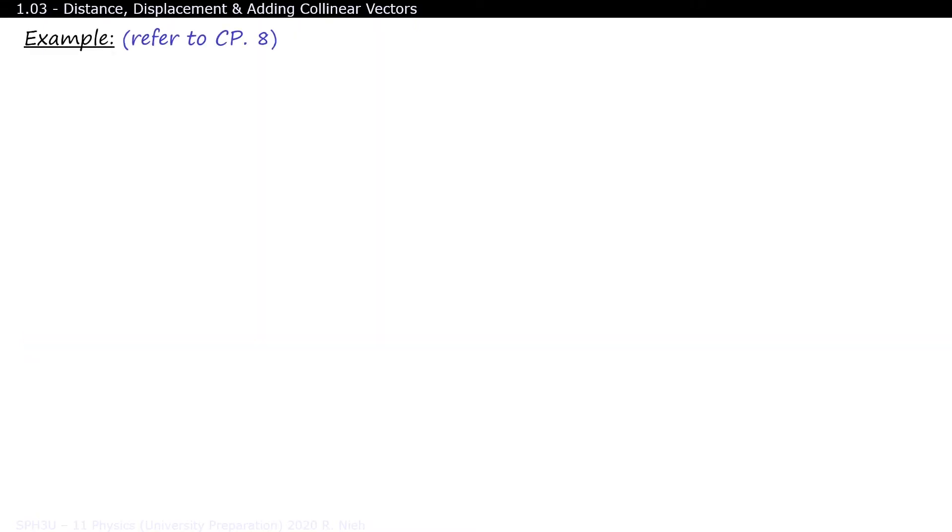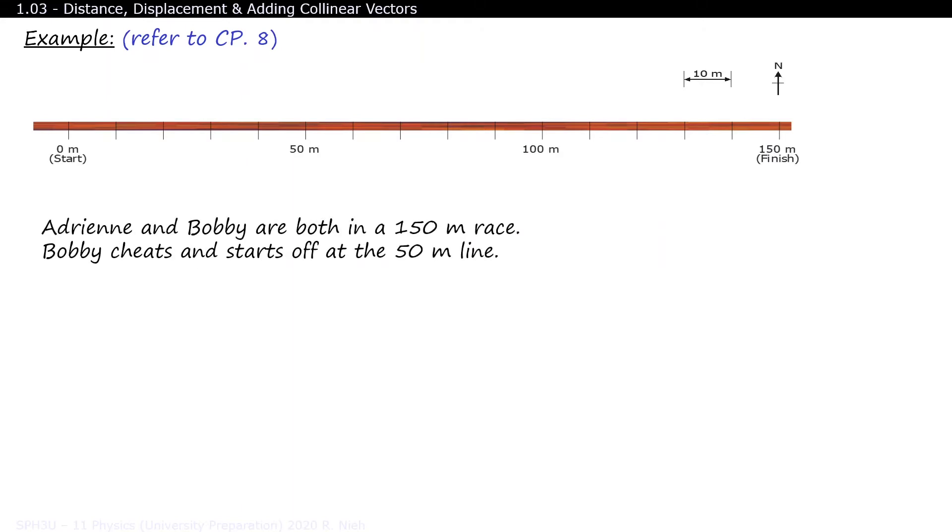You can take a look at course pack page 8 if you want to follow along with this part of the lesson. So we have these two stick friends, Adrian and Bobby. They are both in a 150 meter race. Bobby cheats and starts at the 50 meter line. What are Adrian and Bobby's position with respect to the start line?